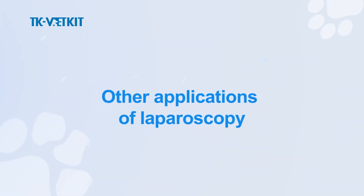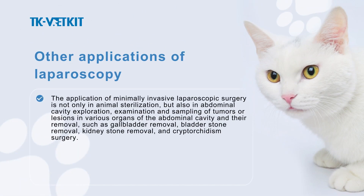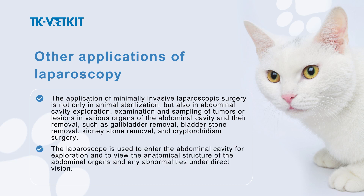Other applications of laparoscopy. The application of minimally invasive laparoscopic surgery is not only in animal sterilization, but also in abdominal cavity exploration, examination and sampling of tumors or lesions in various abdominal organs and their removal, such as gallbladder removal, bladder stone removal, kidney stone removal, and cryptorchidism surgery. The laparoscope is used to enter the abdominal cavity for exploration and to view the anatomical structure of the abdominal organs and any abnormalities under direct vision.